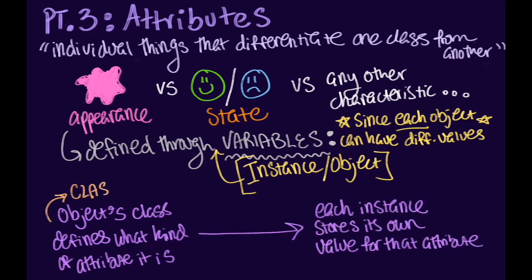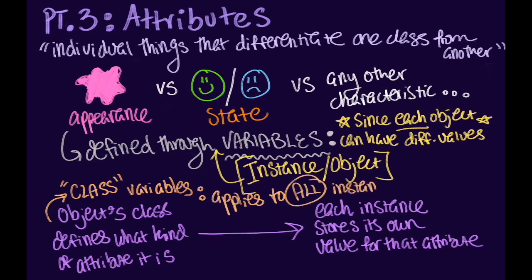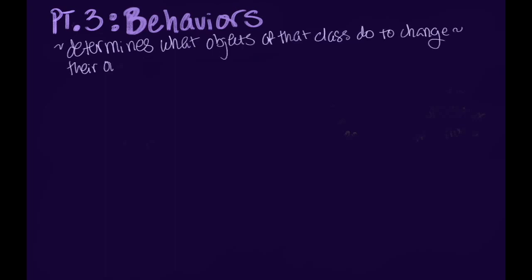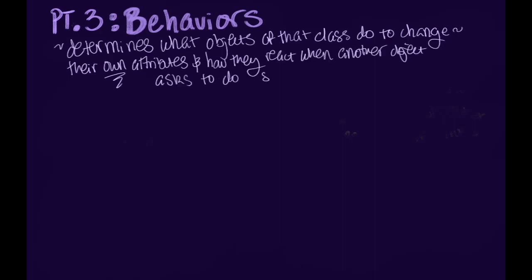However, there are also class variables — an item of information that defines an attribute of an entire class. This variable applies to the class itself and to all of its instances, so only one value is stored no matter how many objects of the class have been created. The second component of our Java classes is its behavior. Such behavior determines what objects of that class do to change their own attributes and how they react when another object asks them to do something. This behavior is dictated through methods.